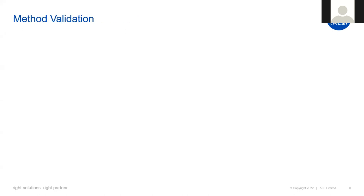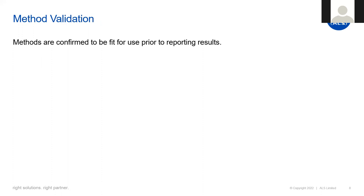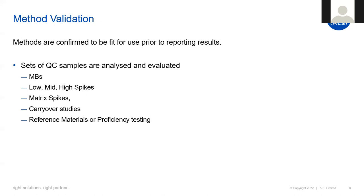Another use for QC is validating our methods. Method validation is a huge topic, but in general terms it is the process of how labs show that they're able to perform methods properly — and also the point where appropriate QC types are chosen. To show control over the method, labs analyze different sets of QC samples, including sets of method blanks, laboratory control samples spiked at different concentrations, matrix spikes to ensure expected matrices don't have negative effects, instrument carryover evaluations, and reference materials or proficiency testing samples. All of these are evaluated against validation objectives established at the beginning of the process to establish fitness for use for a method.